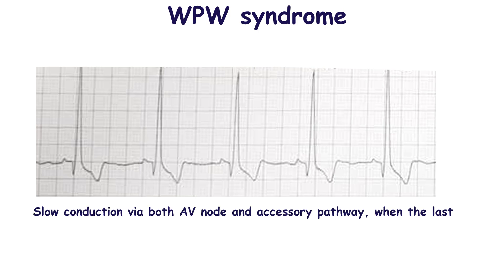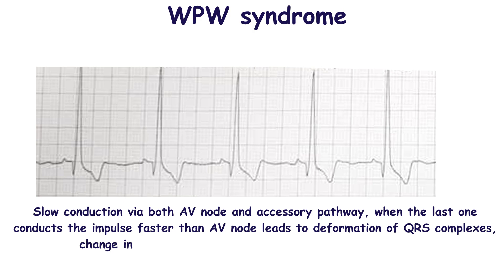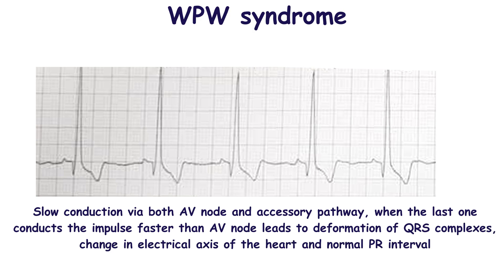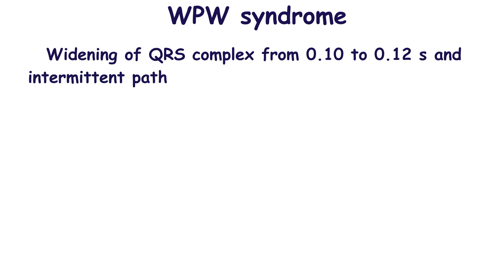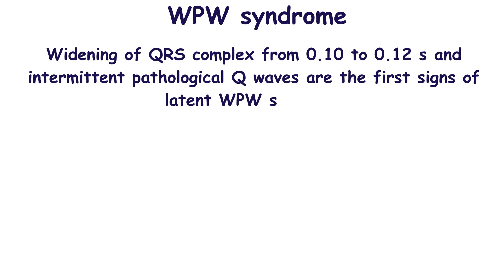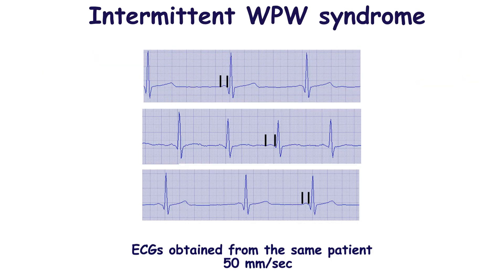If conduction is relatively slow and similar to conduction via the AV node and bundle of His, the PR interval may remain normal, but widening of the QRS complex may be obvious. Non-specific widening of the QRS complex from 0.1 to 0.12 seconds and intermittent pathological Q-waves may be the first signs of latent Wolff-Parkinson-White syndrome. Intermittent pre-excitation is characterized by transitory functioning of an accessory pathway, leading to transient ECG changes such as delta waves, prolonged QRS duration, and shortening of the PR interval.